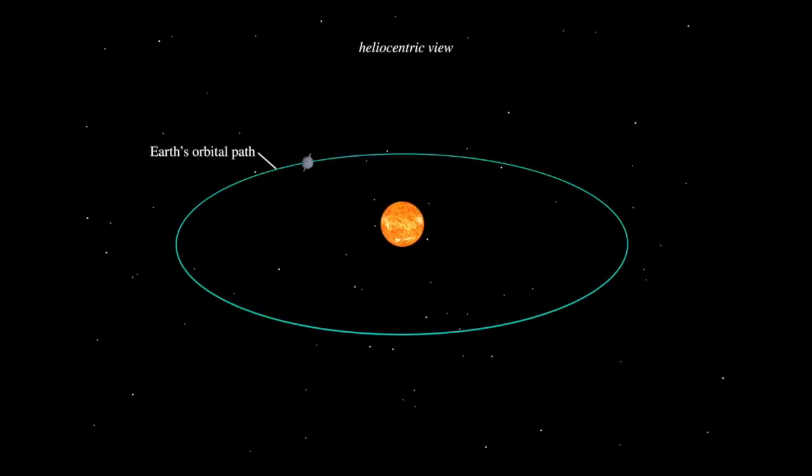All planets in our solar system orbit on the same plane around the Sun, called the ecliptic.